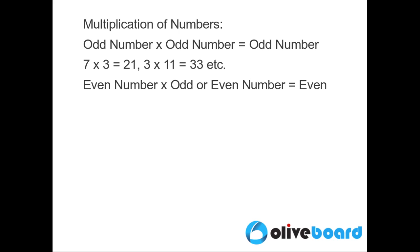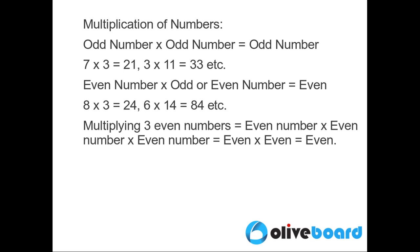If we multiply an even number with either an odd or an even number, the resultant number is also even. Examples include 18 x 3 equal to 24, 6 x 14 equal to 84 and so on.